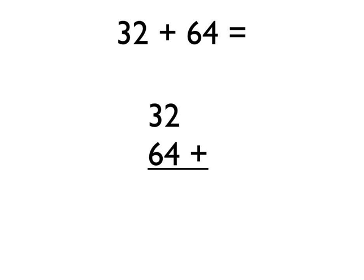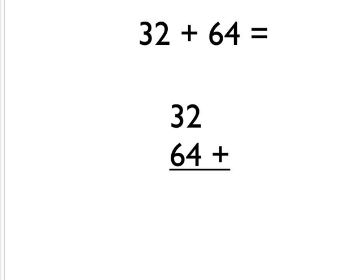Then, once you've done that, it's really easy. All you have to do is simply add up each column. 2 add 4 is 6, so you write a 6 down here, and 3 add 6 is 9, so you write the 9 there. And your answer is 96. Nice and easy.